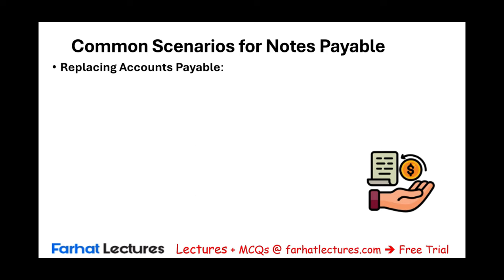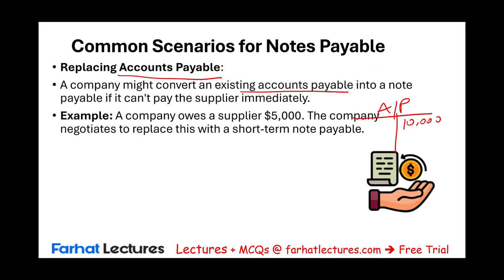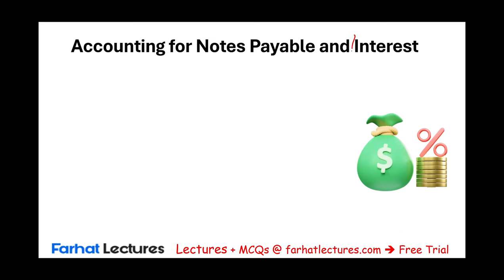A third scenario is refinancing an accounts payable by replacing it with a notes payable. A company might convert an existing accounts payable into a note. For example, a company owes a supplier $5,000 in accounts payable. They negotiate: debit accounts payable to bring it to zero, and credit notes payable. Those are common scenarios for creating a notes payable.